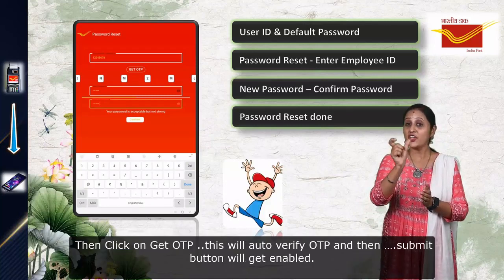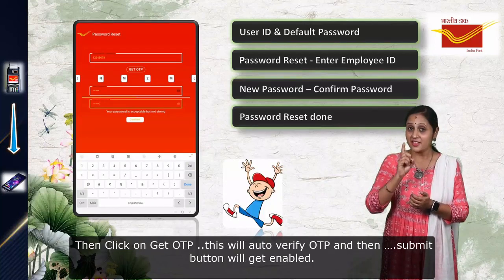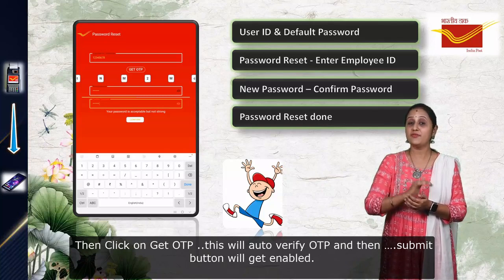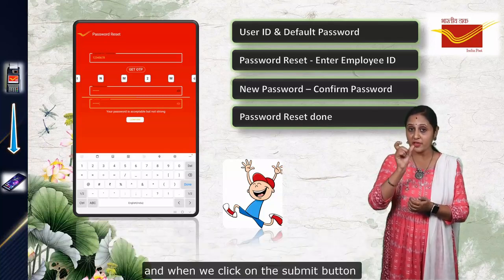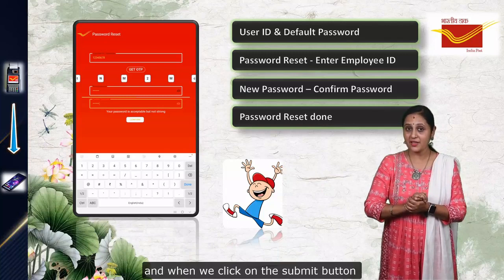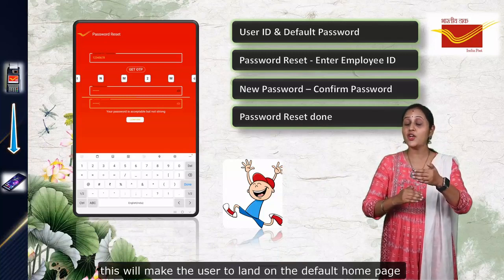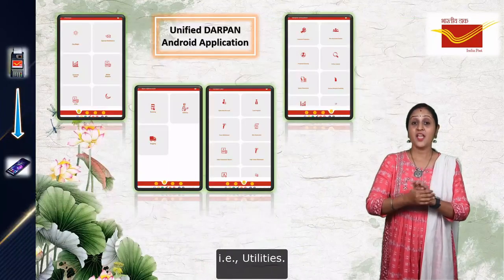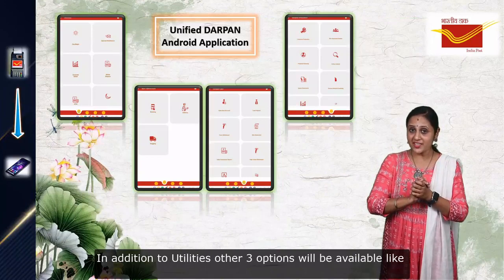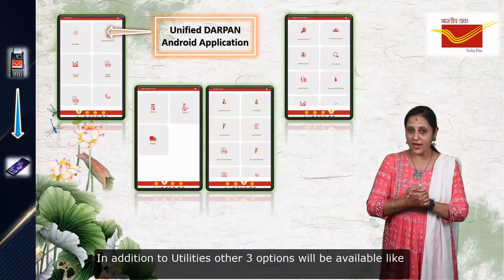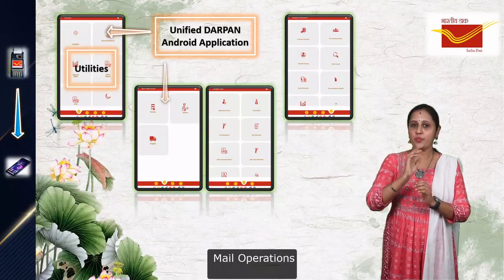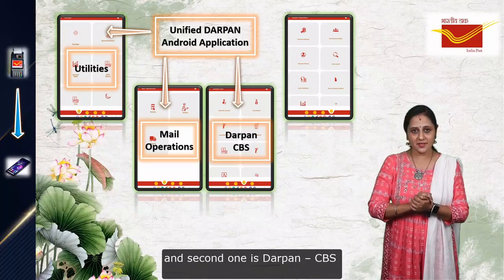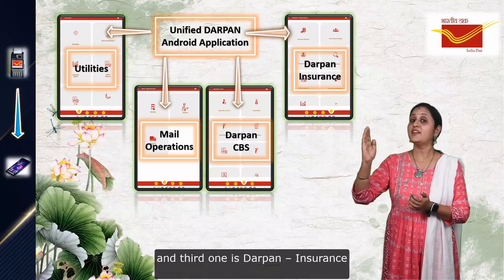Then click on Get OTP. This will auto-verify the OTP and the Submit button will get enabled. When we click on the Submit button, this will make the user land on the default homepage, that is Utilities. In addition to Utilities, three other options will be available — Main Operations, Durpan CPS, and Durpan Insurance.